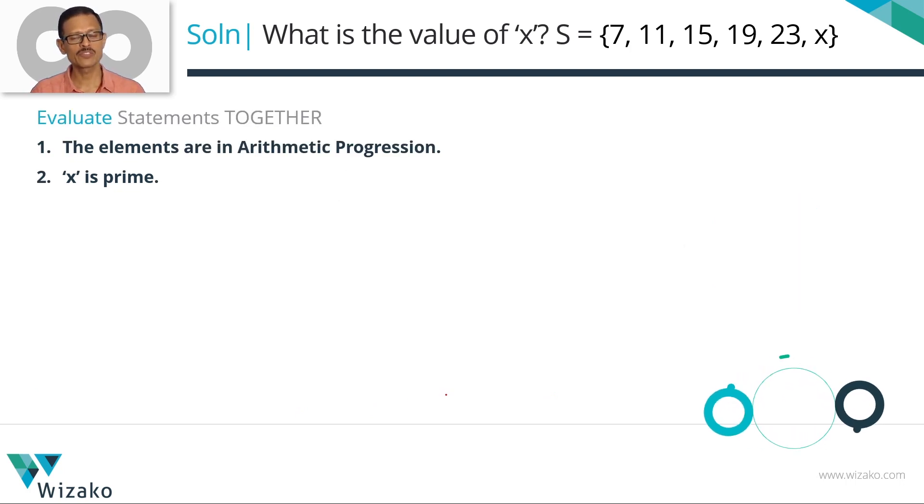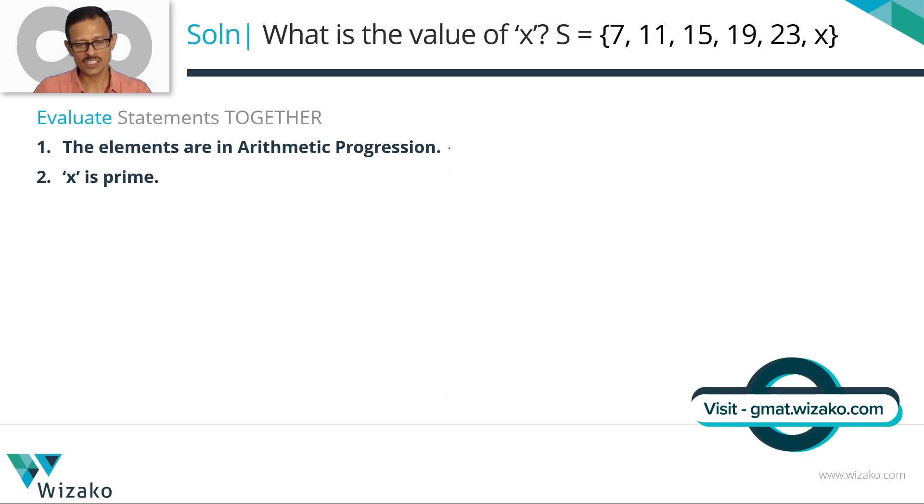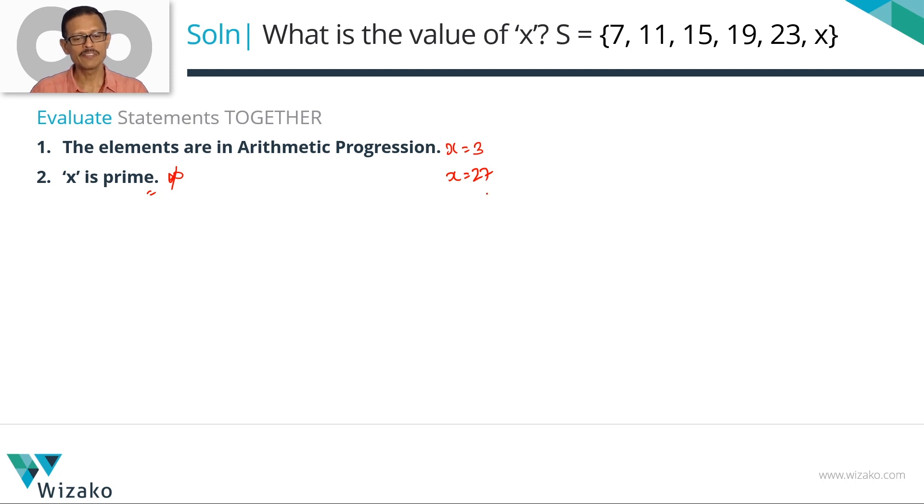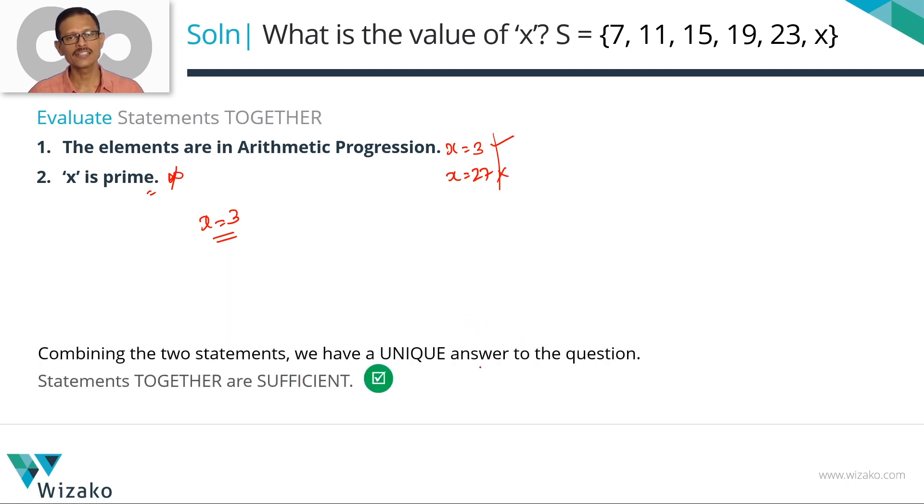Combine the two statements. What do we have from statement 1? The elements are in AP. We shortlisted two possible answers for x. x could be 3 or x could be 27. So statement 1 alone left us with two values. Statement 2 says x is prime. When we evaluated 2 alone, there were infinite possibilities for 2. But when we combine it with 1, there are only two values existing for x from statement 1. One of them, 3 is prime, which is what statement 2 says. 27 is not prime. So if we combine the fact that the elements in the set are in an AP with a common difference of 4, which is what we deduced, and that x is prime, we can say that the only value that x can take, the unique value for x is 3. Combining the statements, we have a unique answer. If we get a unique answer, then we can eliminate what choices. We were down to C or E after evaluating statement 2. Together the statements are sufficient. Let's eliminate E. Choice C is the correct answer.